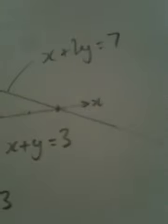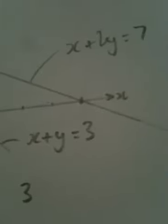So we've got x plus 2y equals 7, x plus y equals 3, where the crossover will be the solution to the equation. So cross is at minus 1 comma 4. In other words, x equals minus 1, y equals 4.